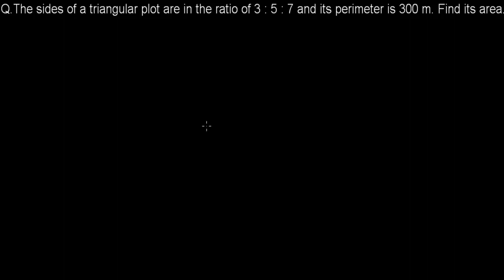Here we have another question from Heron's formula. The question says the sides of a triangular plot are in the ratio 3:5:7 and its perimeter is 300 meters. Find its area.